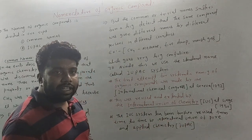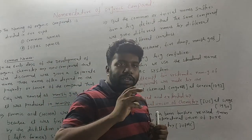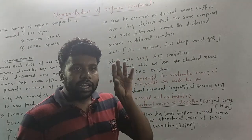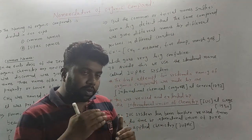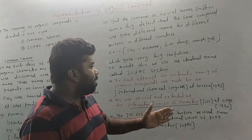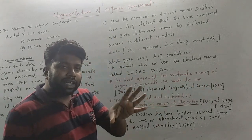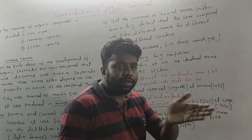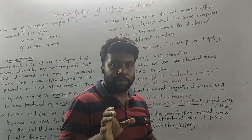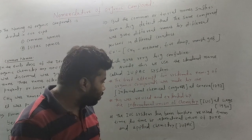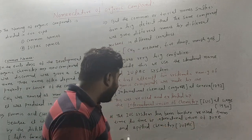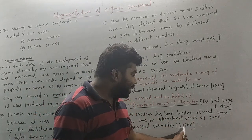The IUC system was further revised from time to time by the International Union of Pure and Applied Chemistry, known as IUPAC. The IUPAC system governs all organic and chemical naming, providing a standard set of rules.